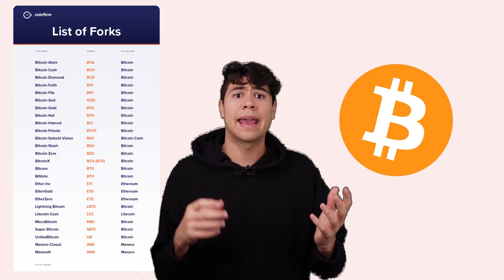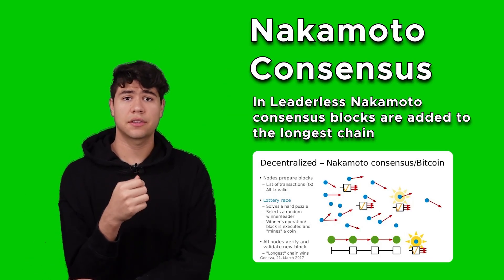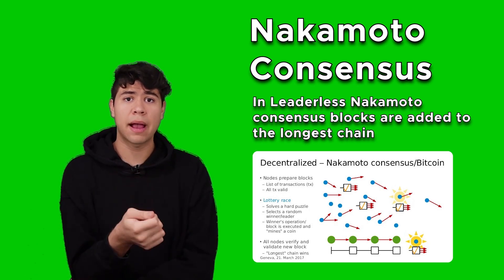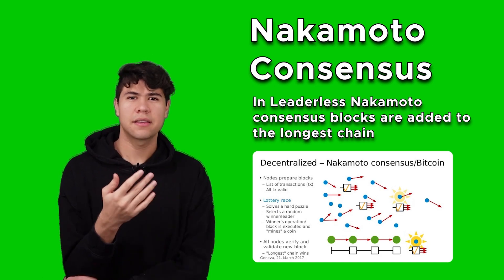Picture this: crypto is young and naive. Bitcoin maxis were the norm, and all there was was Bitcoin and Bitcoin forks. Proof-of-work was basically the only blockchain consensus out there. Proof-of-stake technology was theorized and had some working prototypes, but for the most part was very far out and had core issues.